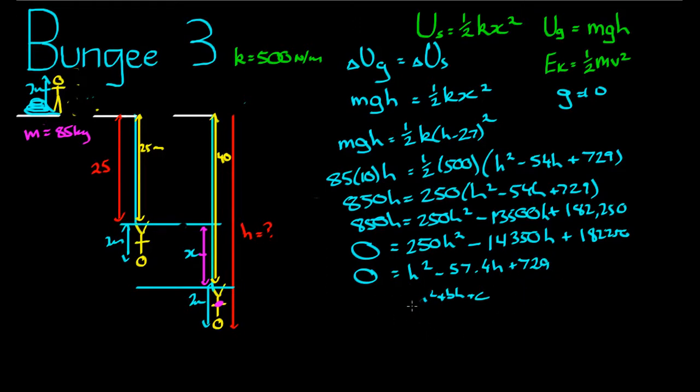So, we can say that h is equal to negative b plus or minus the square root of b squared, take away 4ac, all over 2a.